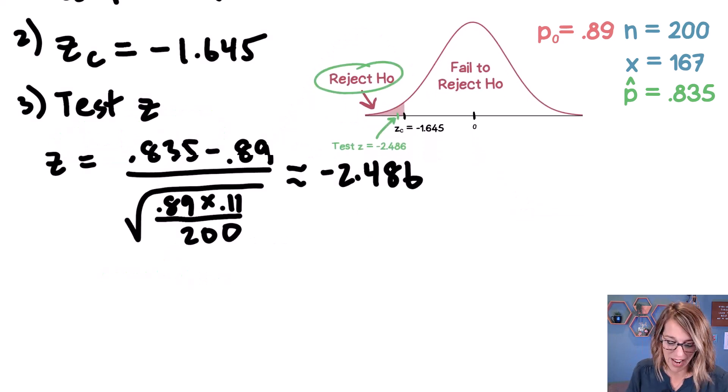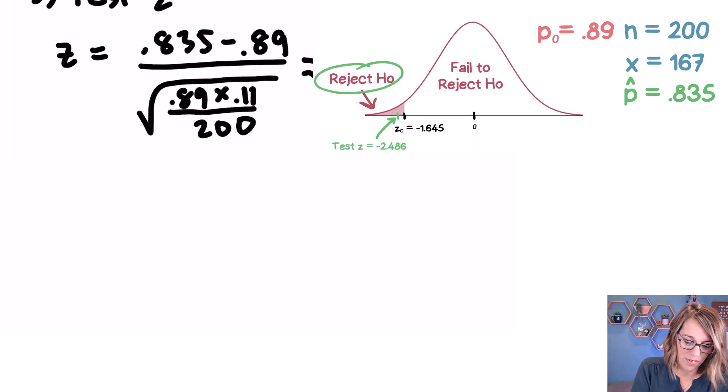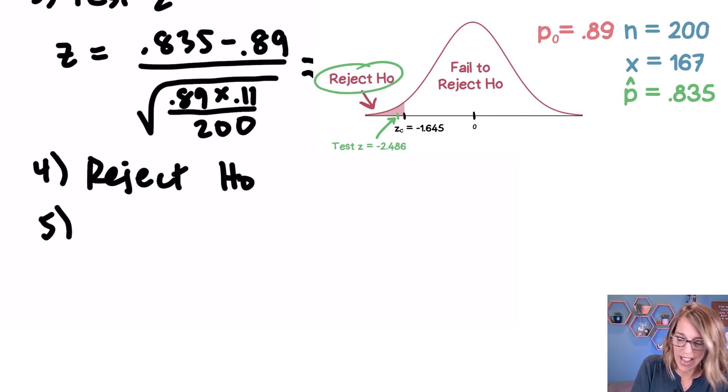So we're going to write that we reject the null hypothesis. This is step number four, our decision. So we reject the null hypothesis, reject H sub zero.